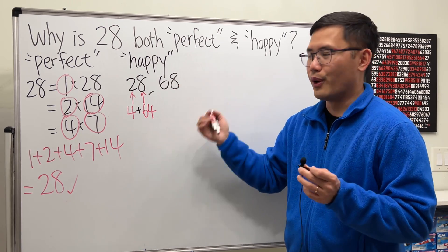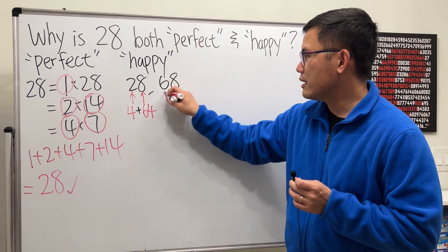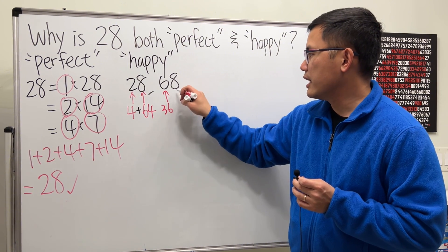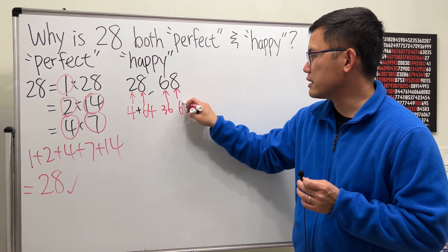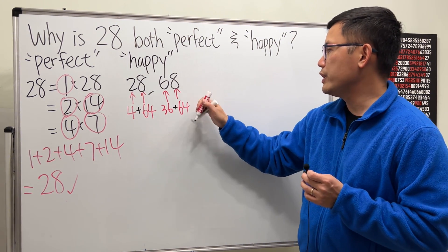Then, we'll just keep going, right? This right here gives us 36. And then this right here gives us 64. And when we add them, we get 100. Cool. And then we continue.